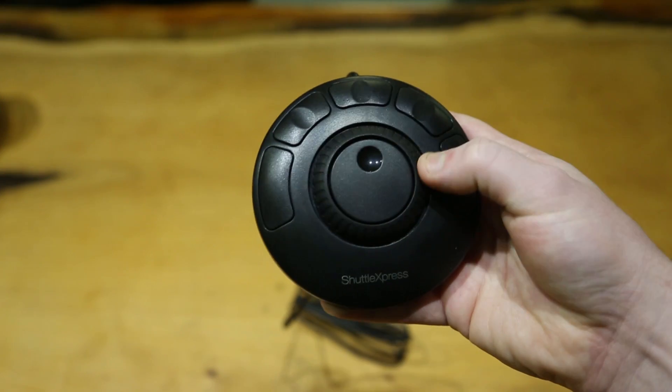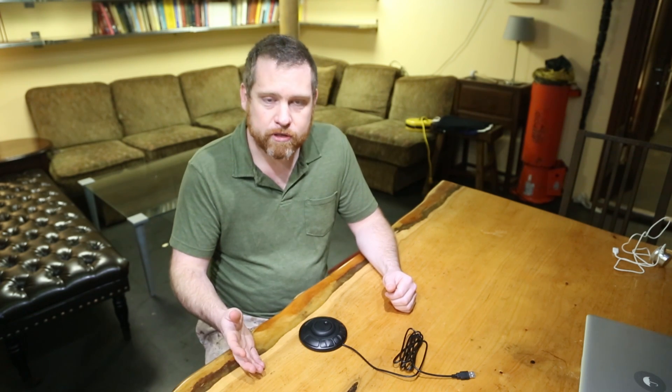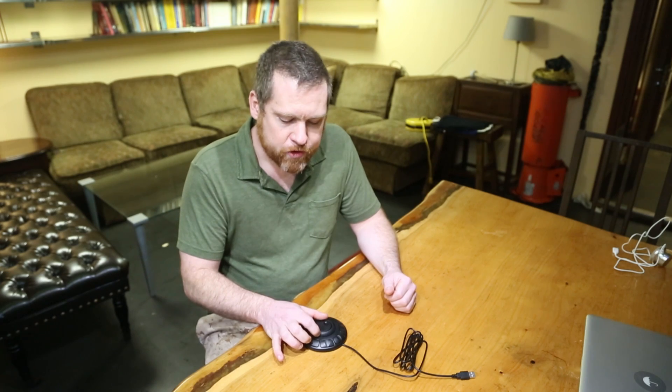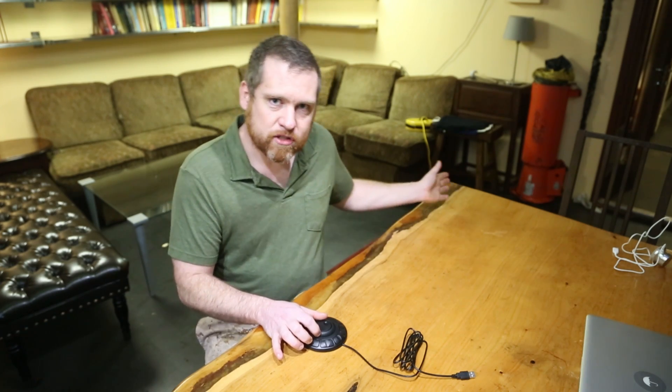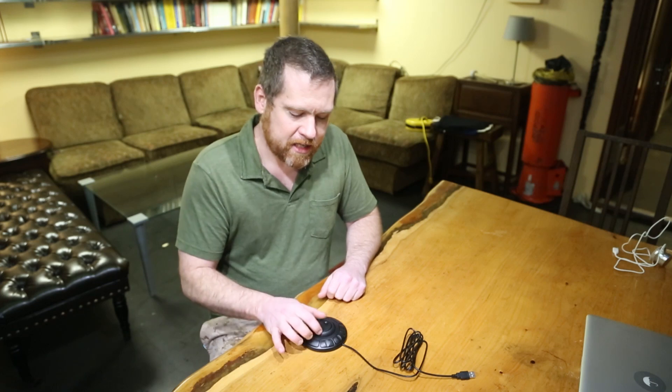It also has an outer jog wheel. This is spring loaded, so as you turn it clockwise or counter clockwise, it will return to its original position. The outer jog wheel has seven different zones to the left and seven different zones to the right. And each of those zones you can configure to different key combinations.